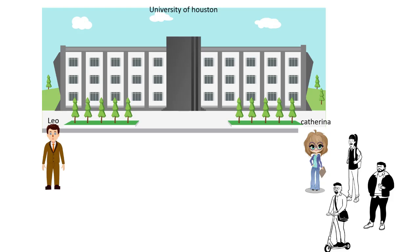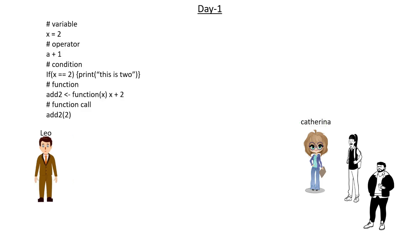To understand the idea behind the creation of the pipe operator, let's see this story. There is a University of Houston located in America. Leo is a professor and Katerina and others are students. Leo is going to a data science boot camp in the college for one week and he will teach R to the students. On the first day, he teaches basic things like variables, operators, conditions, and functions.